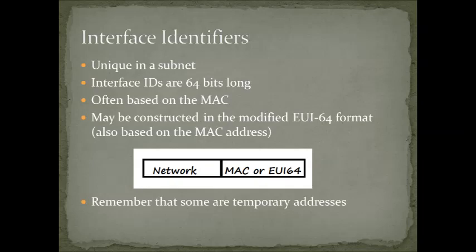Let's take a second to talk about interface identifiers. In IP Version 6, nodes can have many interfaces and many different addresses associated with those interfaces. There are a couple of rules: interface identifiers are supposed to be unique in a subnet — that's why sometimes we see the dynamic generation of temporary addresses. The interface IDs are 64 bits long, and as we've seen in some of the traffic, a lot of times they're based on the MAC address, but they may also be based on this modified EUI-64 format.